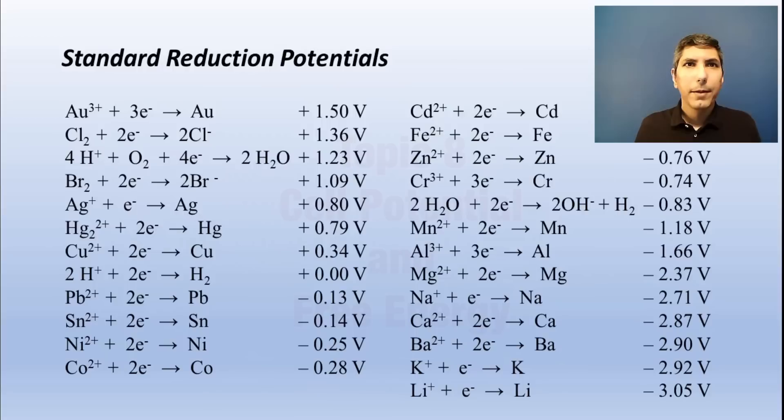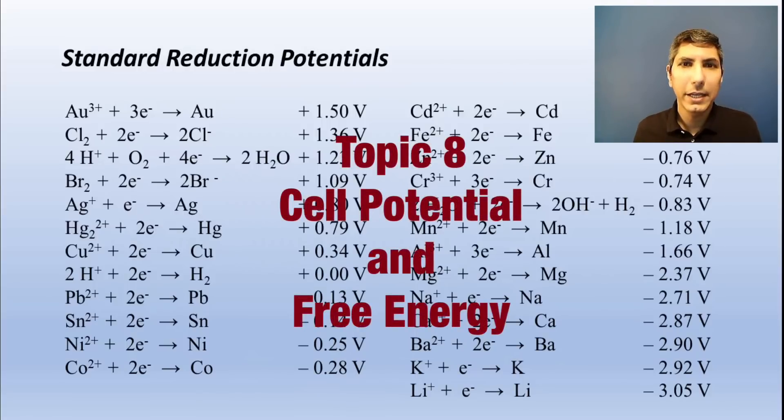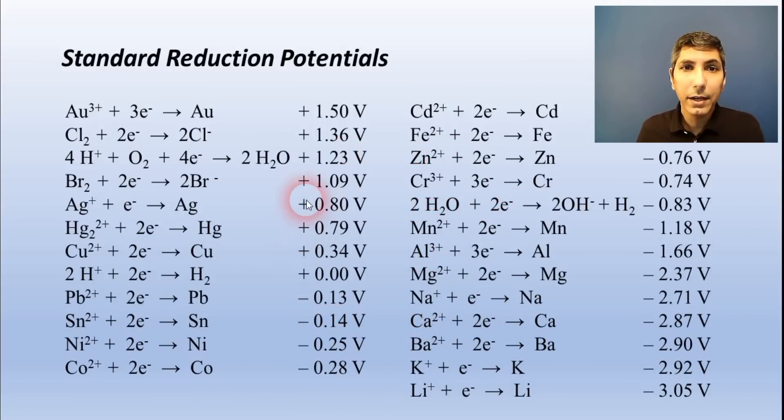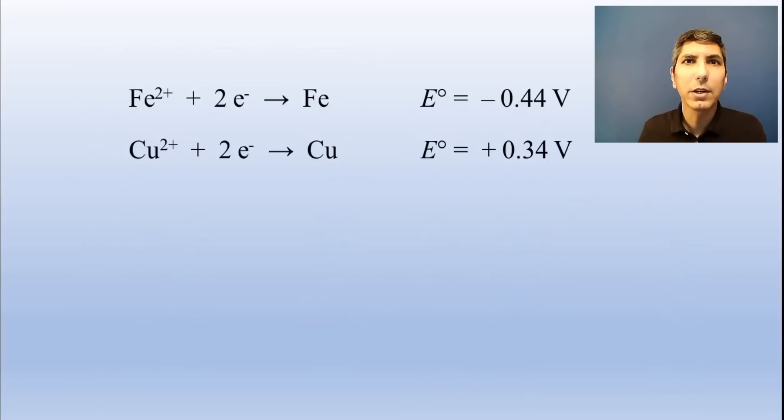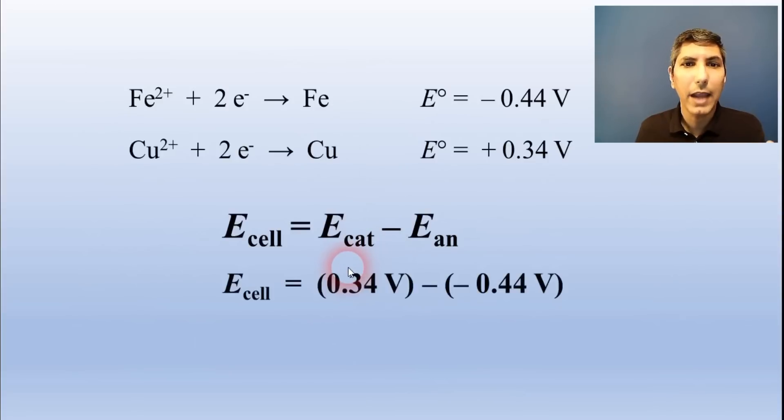Every galvanic cell has a cell potential, sometimes called its voltage or its potential difference. In our list of half reactions, notice that these are all written as reduction potentials, even though every redox reaction has one oxidation and one reduction. We use these standard reduction potentials as written and calculate our cell potential by taking the value for the cathode from the list and subtracting the value for the anode.